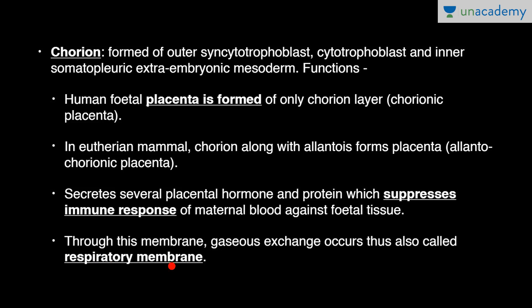So to summarize the four membranes: amnion is protective in function, yolk sac is nutritive in function, allantois is excretory in function, and chorion is respiratory in function. That's all for this lesson. Thanks for watching.